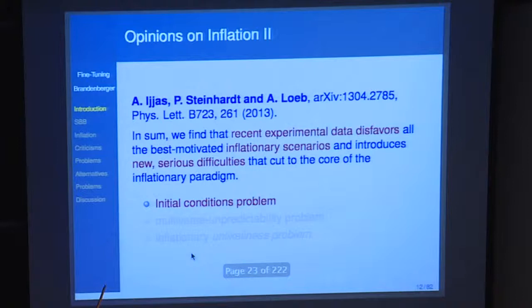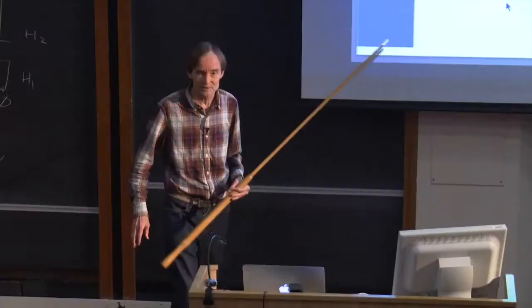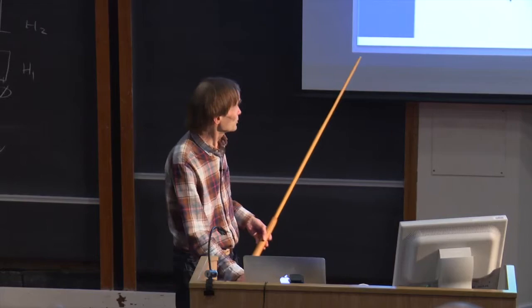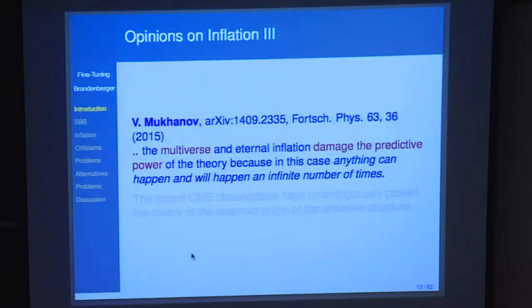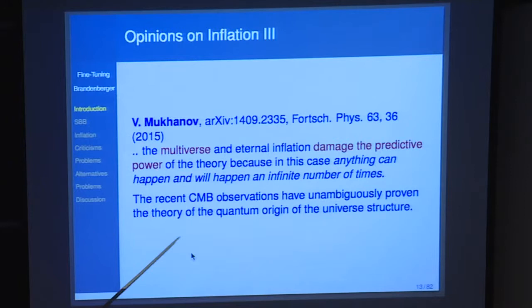More precisely, Steinhardt et al. talk about an initial condition problem for inflation, something they call the multiverse unpredictability problem, and an inflationary unlikeliness problem. Meanwhile, Mukhanov — who was actually the first to compute the spectrum of cosmological perturbations including a spectral tilt — steps back and says the multiverse and eternal inflation damage the predictive power of the theory, but then argues that CMB observations have unambiguously proven the quantum origin of structure in the universe, independent of what gives the background.